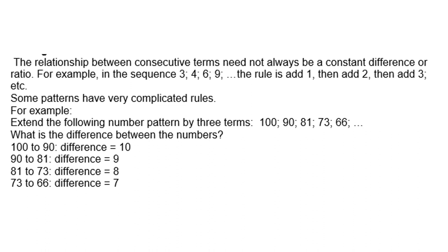From 90 to 81, the difference is 9. From 81 to 73, the difference is 8. From 73 to 66, the difference is 7. So from 66 to the next number, the difference should be 6. The next number will differ by 6, then the difference will be 5, then 4. That is how you determine the next three numbers.